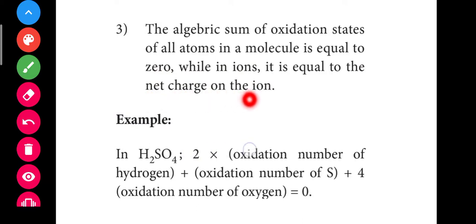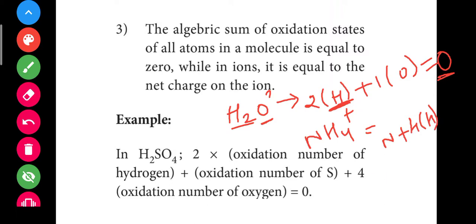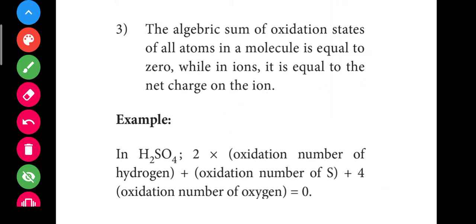While for an ion, the algebraic sum is equal to the net charge. For H2O: let oxygen be x. So 2 into hydrogen (plus 1) plus 1 into x equals 0. That gives 2 plus x equals 0, so x equals minus 2. For NH4+: x plus 4 into plus 1 equals plus 1, so x plus 4 equals 1, giving x equals minus 3.